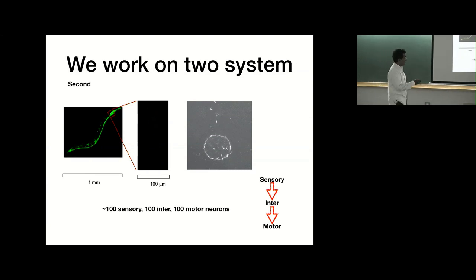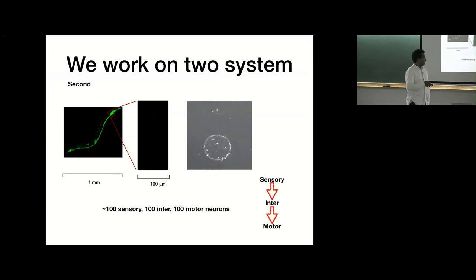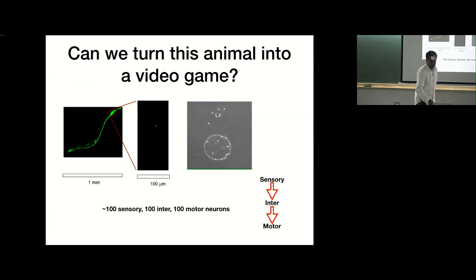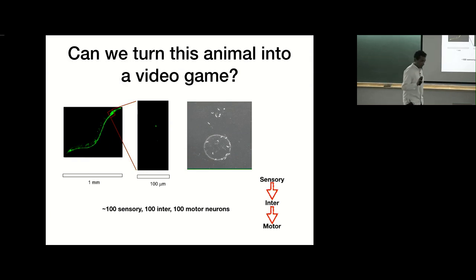That nervous system is controlling behavior. This animal, quite unlike us, has only 300 neurons: 100 sensory neurons that sense the environment, 100 interneurons that presumably process information, and 100 motor neurons that control the muscles and make it move. In this case too, we want to ask: can we turn this animal into a video game and make it do precisely what we want? Both in the case of cells and animals, we just want to turn them into video games.